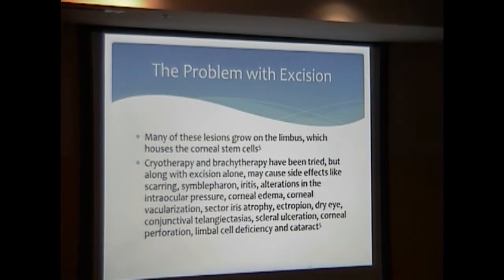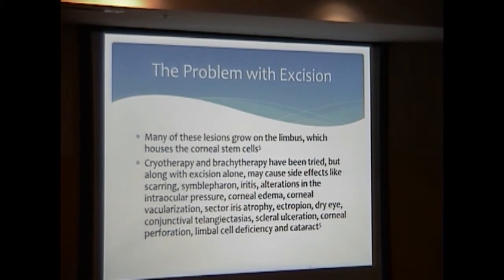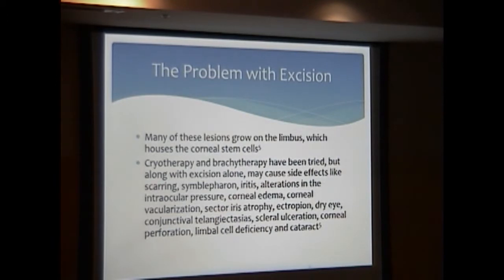The most common position for these lesions to develop is on the limbus, specifically the nasal portion of the eye. They house the corneal stem cells, which can lead to stem cell deficiency. Cryotherapy and brachytherapy have been reported in the literature, but have been associated with negative side effects such as symblepharon, iritis, corneal edema, ectropion, conjunctival telangiectasia, and scleral ulceration, among others.